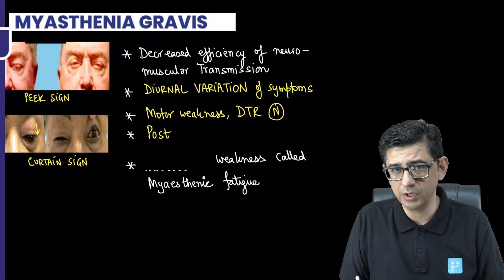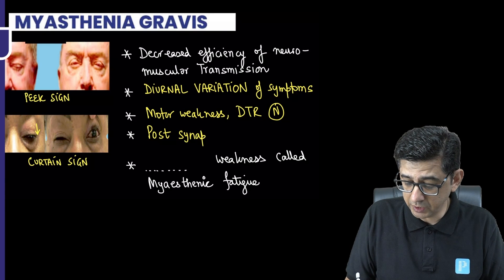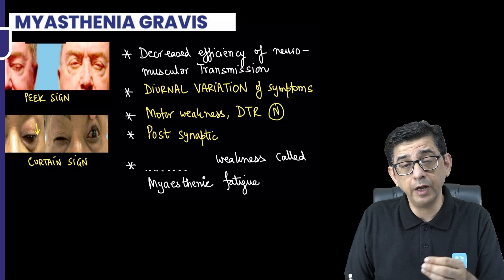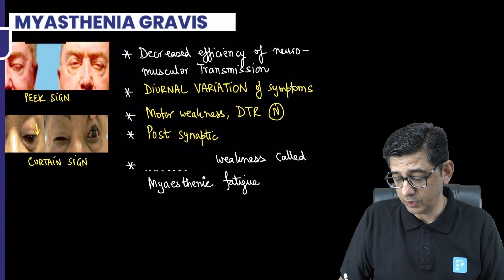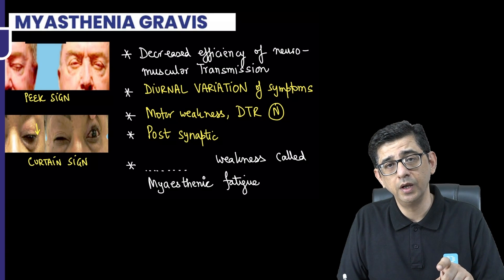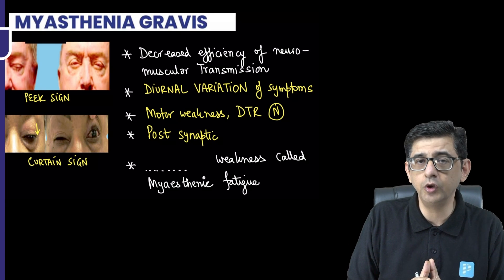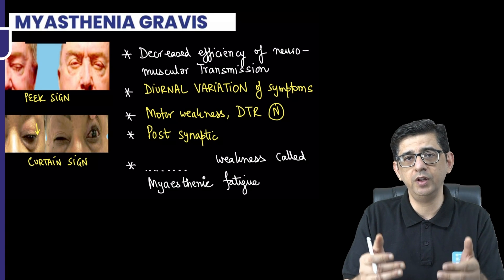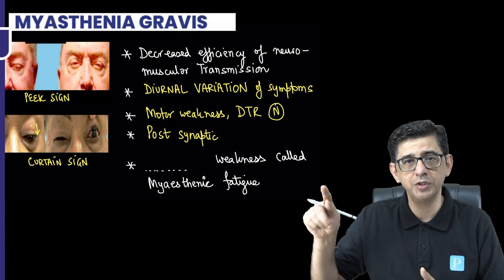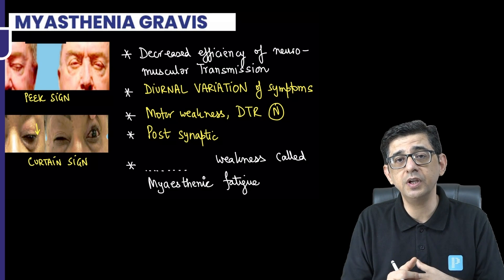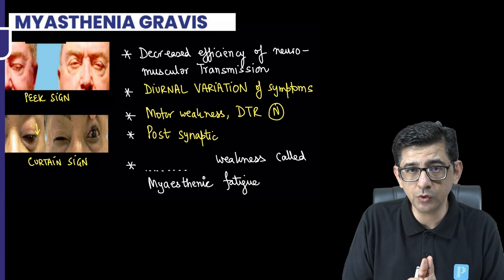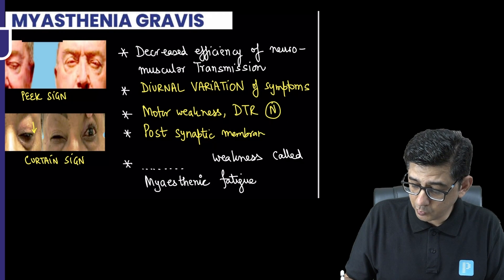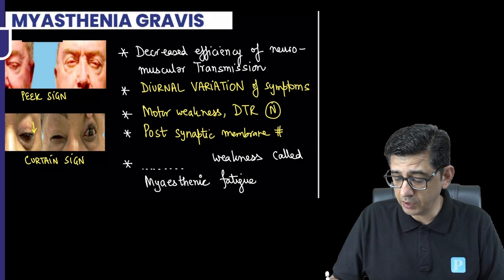As the disease progresses, there is complement-mediated damage to the post-synaptic membrane — this explains why eculizumab works in these patients, as it blocks complement-mediated damage. This complement-mediated damage causes flattening of the post-synaptic cleft. Normally, the post-synaptic area has undulations, and these undulations are damaged, reducing the total surface area available for acetylcholine to act. So not only are receptors damaged, but the surface area where acetylcholine acts is also reduced — this is post-synaptic membrane damage.